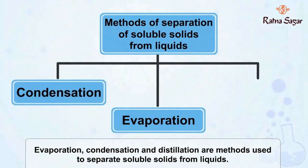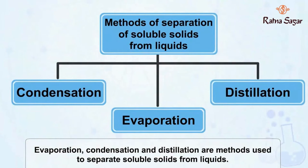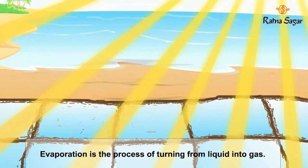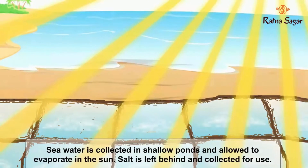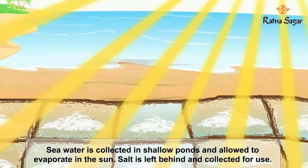Evaporation, condensation, and distillation are methods used to separate soluble solids from liquids. Evaporation is the process of turning from liquid into gas. The salt that we use at home is mostly obtained by evaporating sea water. Sea water is collected in shallow ponds and allowed to evaporate in the sun. Salt is left behind and collected for use.